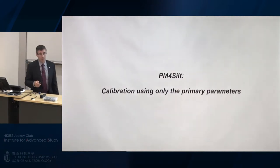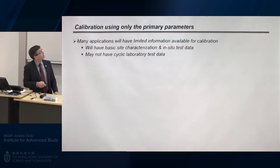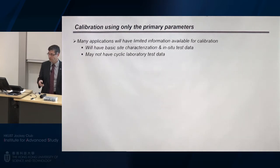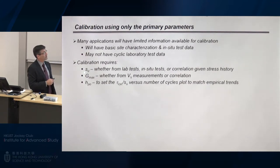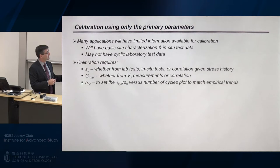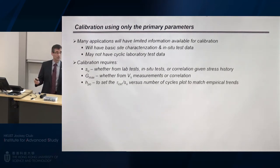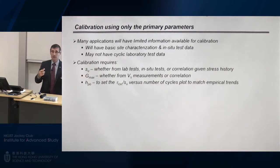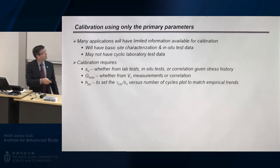The 20 secondary parameters all have default values, and you can adjust them based on lab data as you see fit. Suppose at a site all you have is very simple data — maybe CPTs and a couple of vanes, no cyclic lab data — and you want to calibrate the model for a reasonable response. The three parameters you'd pick are undrained shear strength, an estimate of shear wave velocity or G-max, and this contraction rate parameter, which you'll iterate to get the right ratio of cyclic to monotonic strength. You always do that by using single element simulations — drive a single element in simple shear and show what the model predicts relative to your design correlations.